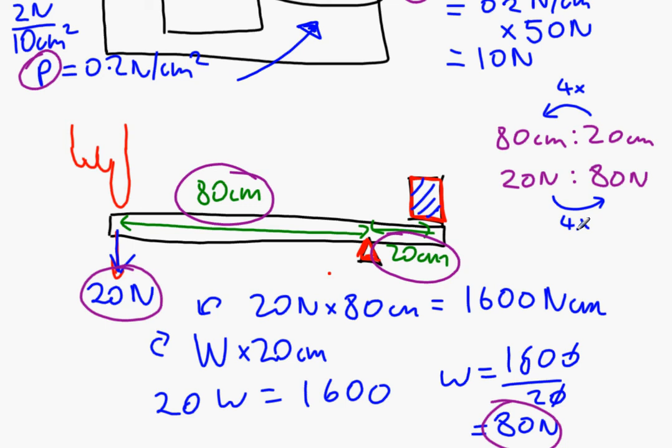If I move the pivot now so it's over here, and now let's say we've got 10 centimeters here and 90 centimeters here.